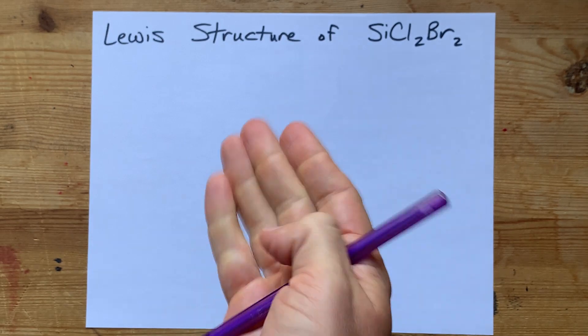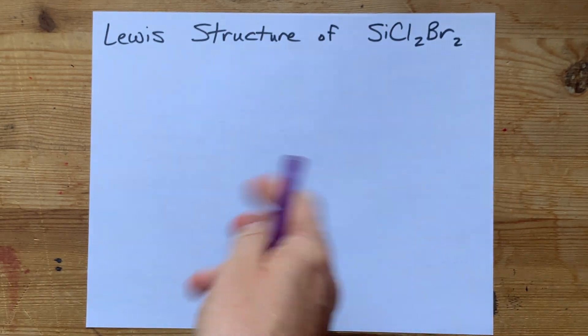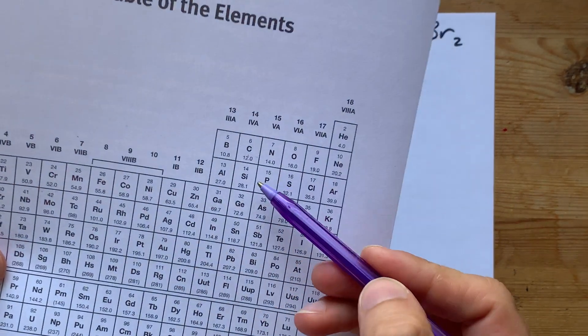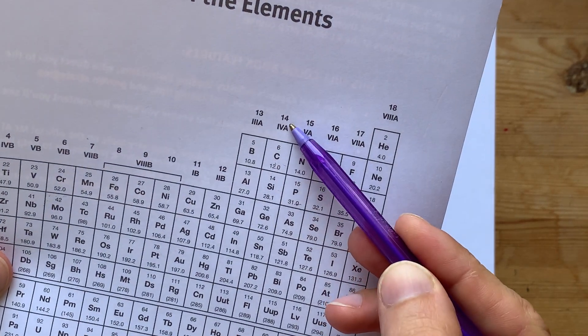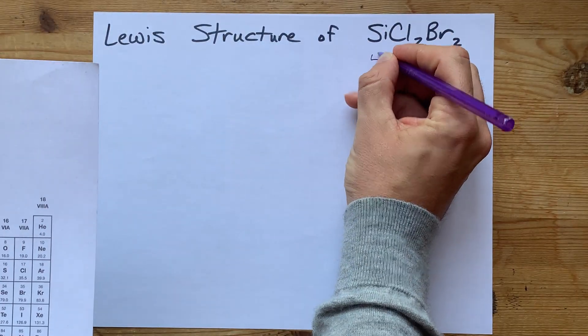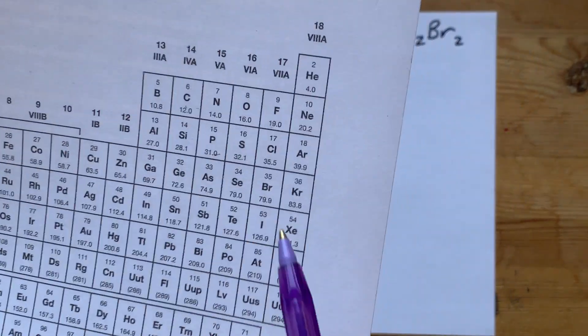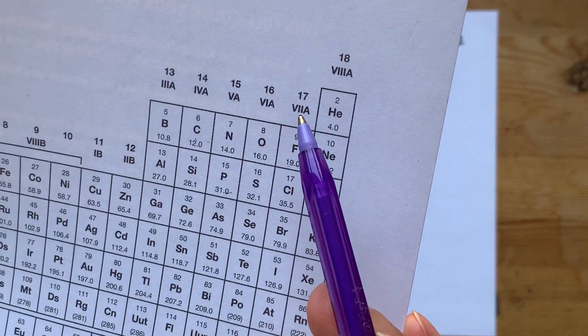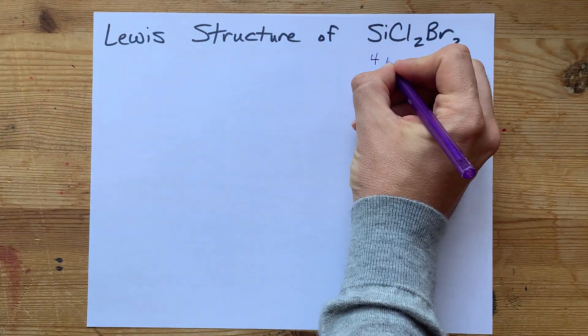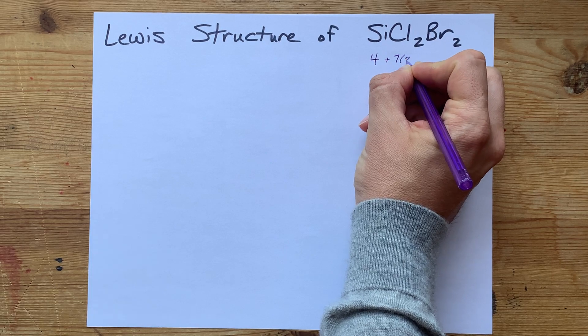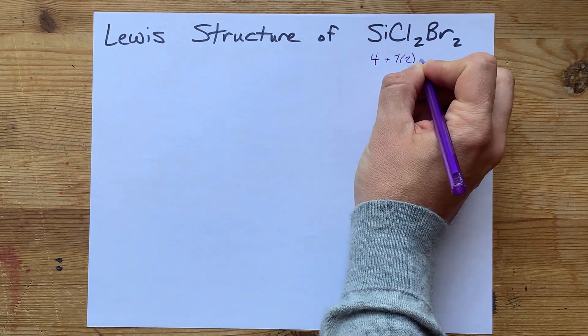We need to figure out how many valence electrons each one brings before we begin. Silicon in group 14 brings four valence electrons. Chlorine in group 17 brings seven valence electrons, but there are two of them, so I'm going to do seven times two there.